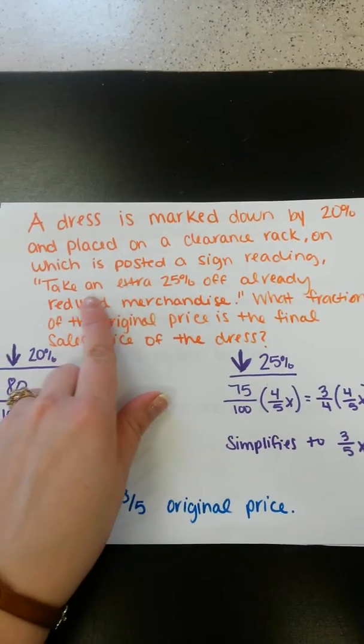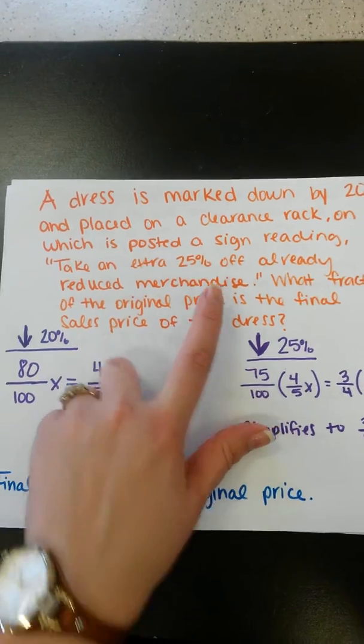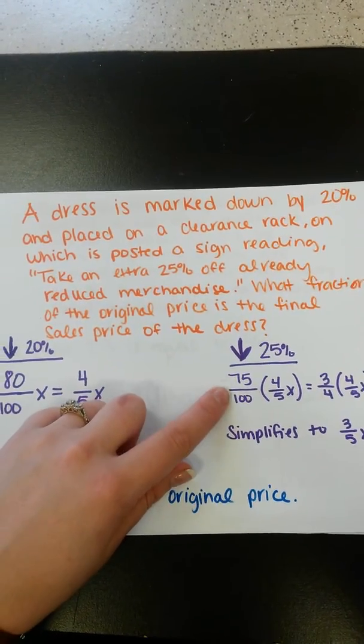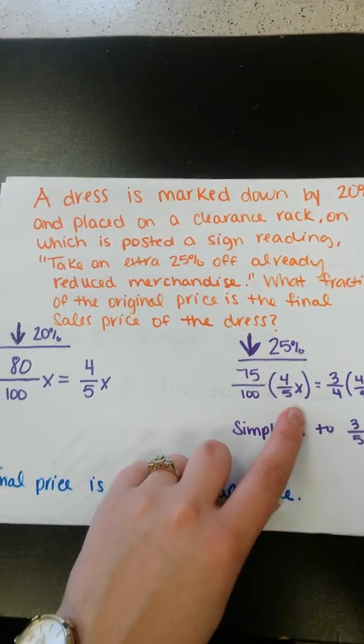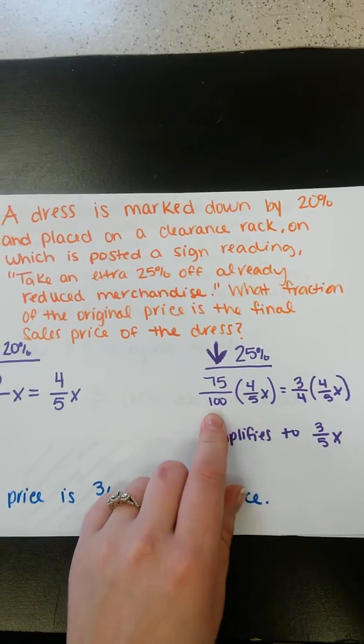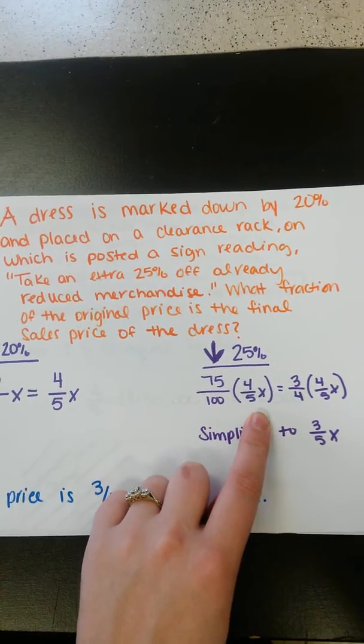But it also says to take an extra 25% off. So to take an extra 25% off, we're going to pay 75% of that reduced price. So 75% is equal to 75 over 100.